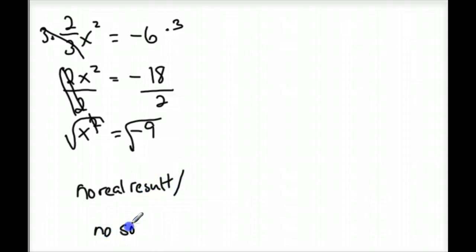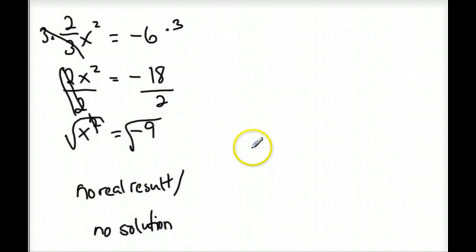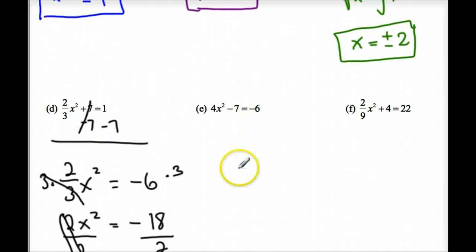You can write 'no real results' or 'no solution' — either one works. There's no solution because you cannot take the square root of a negative number.